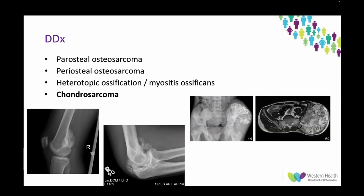Differentials include paraosteal osteosarcoma, periosteal osteosarcoma, heterotopic ossification or myositis ossificans, and always keep in mind chondrosarcoma. We'll talk a little bit more about sarcomatous change later.